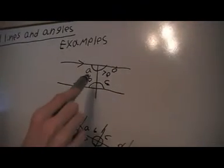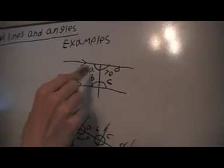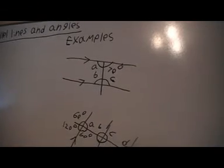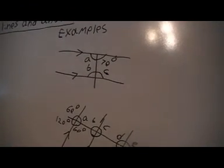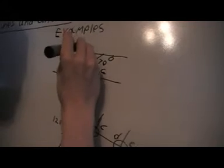So I've got an angle here that's 70 degrees. I want to find A, B and C. Now that's a straight line. We know that angles on a straight line are up to 180 from the last one. So A is 110.